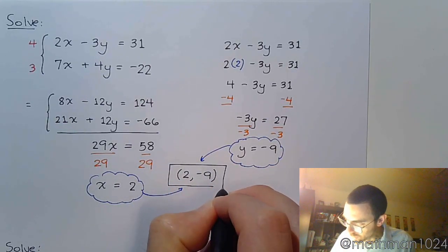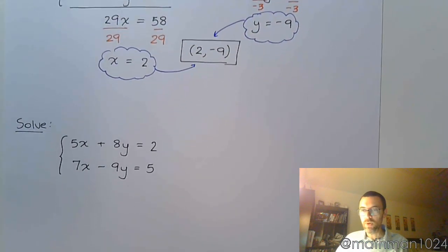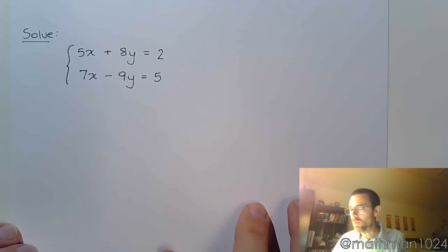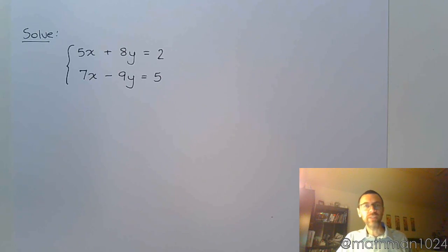Well everything seems to be going along just splendidly, right? Let's do one more guy right here. So 5x plus 8y equals 2 and 7x minus 9y equals 5. So doing what we did for the first problem, let's try to eliminate the y's, right? We see they already have opposite signs, so maybe that's what we're supposed to do.